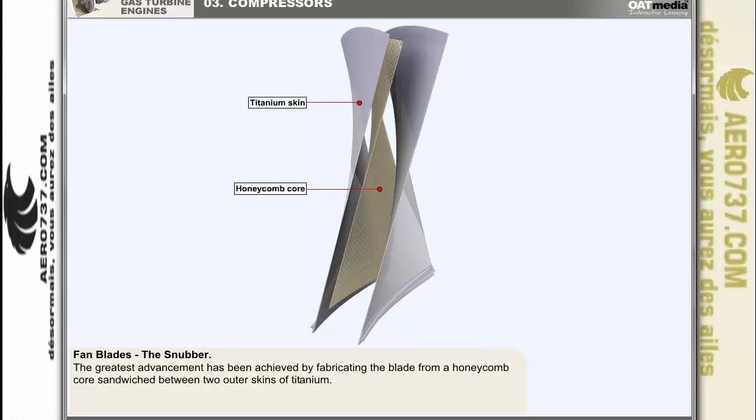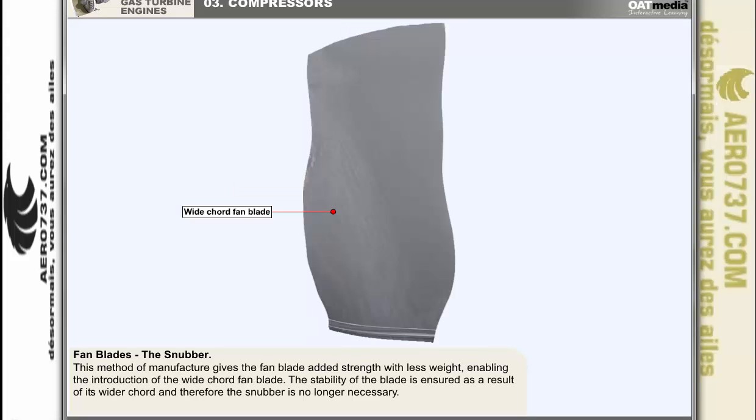The greatest advancement has been achieved by fabricating the blade from a honeycomb core sandwiched between two outer skins of titanium. This method gives the fan blade added strength with less weight, enabling the introduction of the wide chord fan blade. The stability of the blade is ensured as a result of its wider chord and therefore the snubber is no longer necessary.